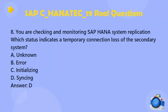Question 8: You are checking and monitoring SAP HANA system replication. Which status indicates a temporary connection loss of the secondary system? a. Active. b. Error. c. Initializing. d. Syncing. Answer: d.